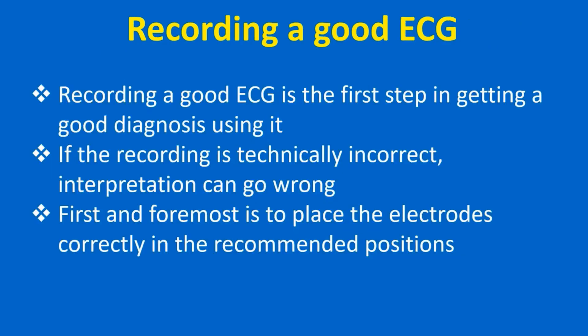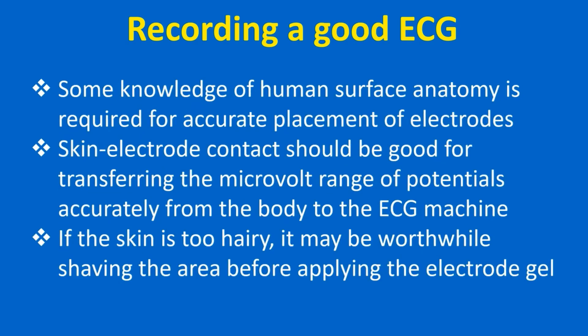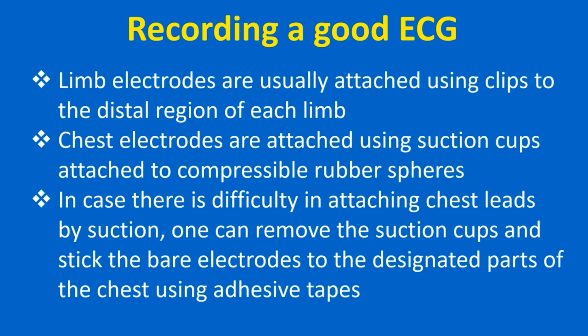Recording a good ECG is the first step in getting a good diagnosis. If the recording is technically incorrect, interpretation can go wrong. First and foremost is to place the electrodes correctly in the recommended positions; some knowledge of human surface anatomy is required for accurate placement. Skin-electrode contact should be good for transferring the microvolt-range potentials accurately. If the skin is too hairy, it may be worthwhile shaving the area before applying electrode gel. Limb electrodes are usually attached using clips to the distal region of each limb, while chest electrodes are attached using suction cups attached to compressible rubber spheres.